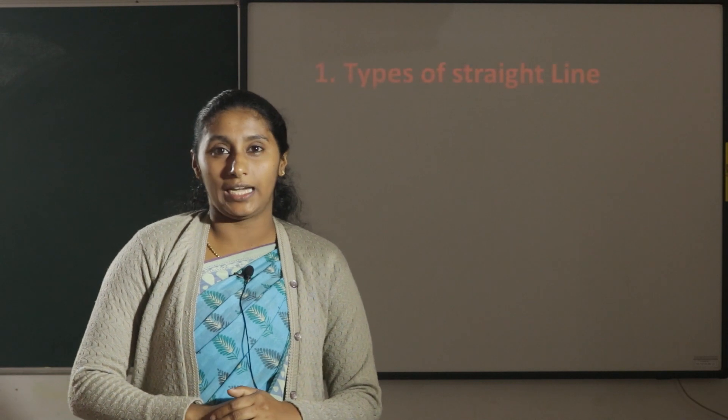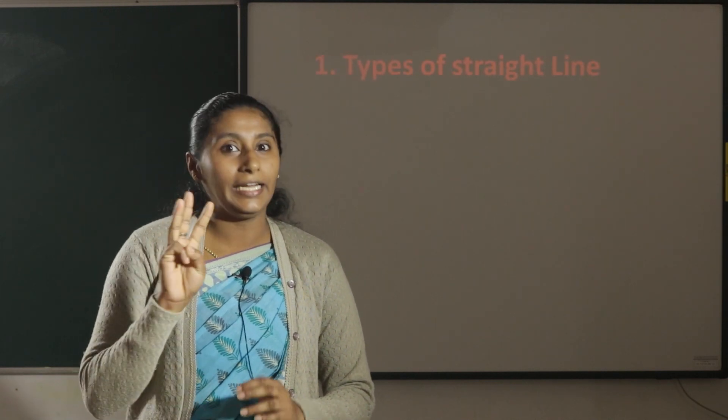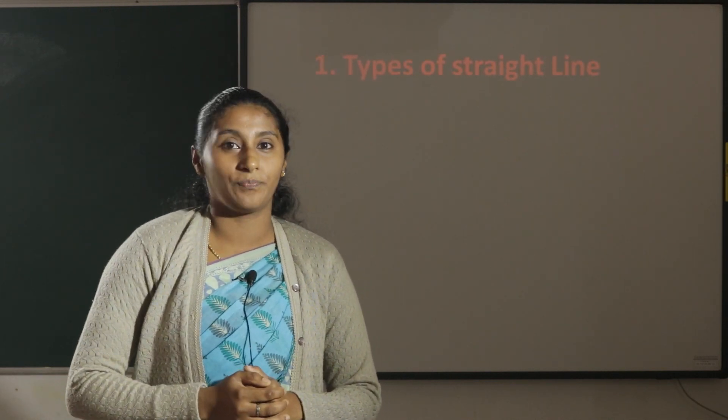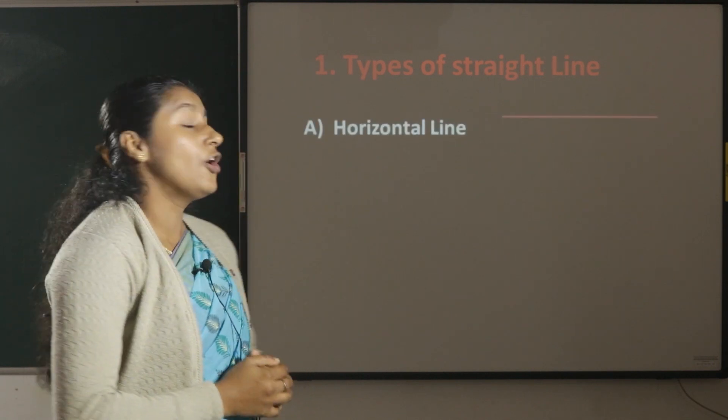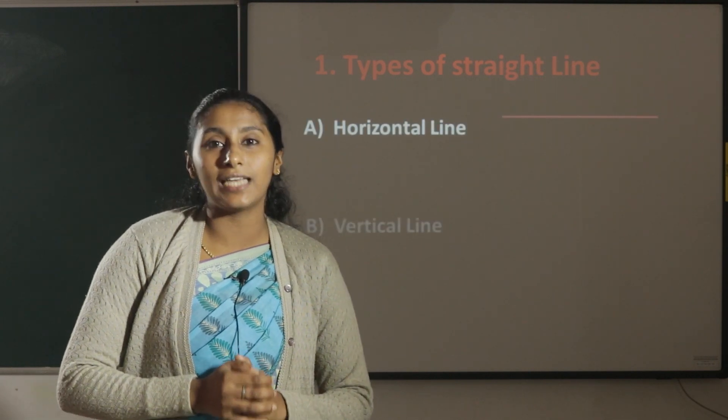Now, types of straight lines. There are three types of straight lines. Horizontal line, vertical line and slanting line.